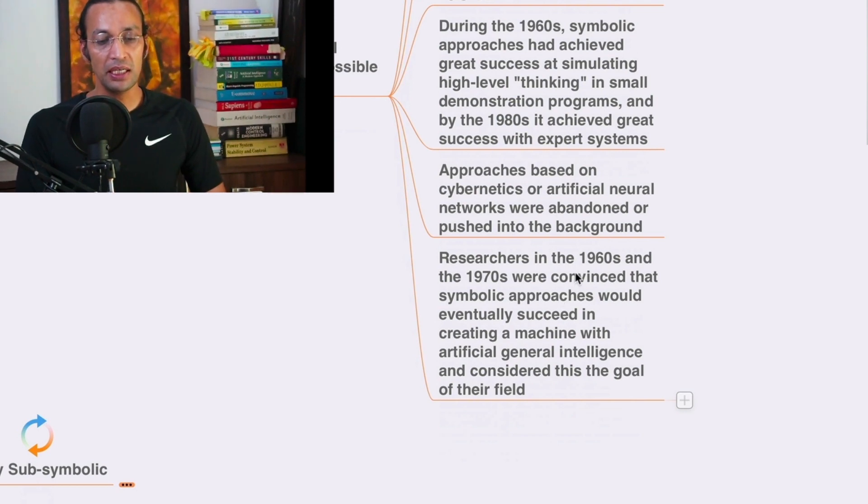Researchers in 1960 and the 1970s were convinced that the symbolic approaches would eventually succeed in creating a machine with artificial general intelligence, AGI, and consider this the goal of the field.